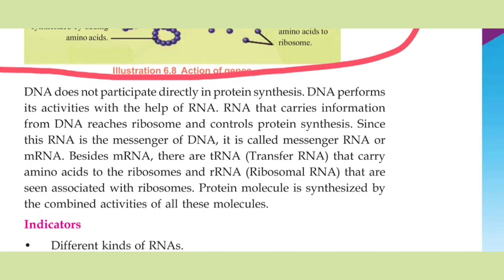DNA does not participate directly in protein synthesis. DNA performs its activities with the help of RNA. RNA that carries information from DNA reaches the ribosome and controls protein synthesis. Since this RNA is the messenger of DNA, it is called messenger RNA or mRNA. Besides mRNA, there is tRNA — transfer RNA — that carries amino acids to the ribosome, and rRNA — ribosomal RNA — that is associated with the ribosome. The protein molecule is synthesized by the combined activities of all these molecules.